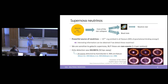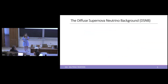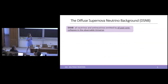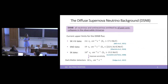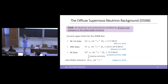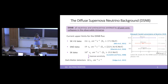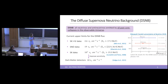Luckily, we have another way of detecting neutrinos from supernovae: the Diffuse Supernova Neutrino Background, or DSNB. The DSNB is the flux of all neutrinos and anti-neutrinos emitted by all past core collapses in the observable universe. It hasn't been detected yet, but these are the current upper limits from different experiments. The most stringent limit for the electron anti-neutrino flux comes from Super-Kamiokande data before gadolinium was added. Recently at Neutrino 2024, new results from Super-Kamiokande with two gadolinium phases showed a 2.3-sigma excess over the background-only hypothesis.